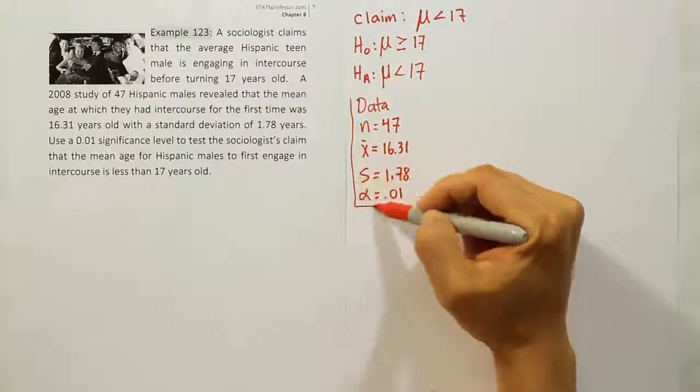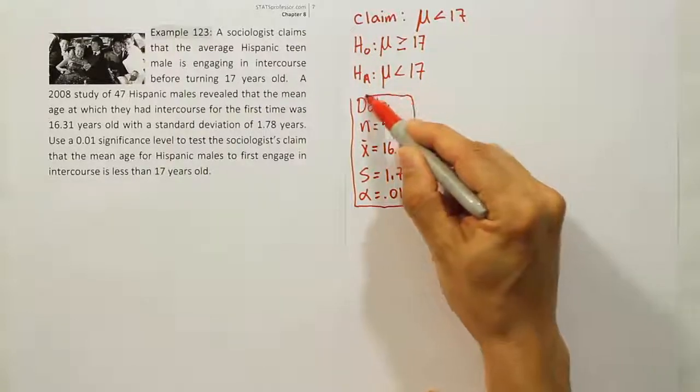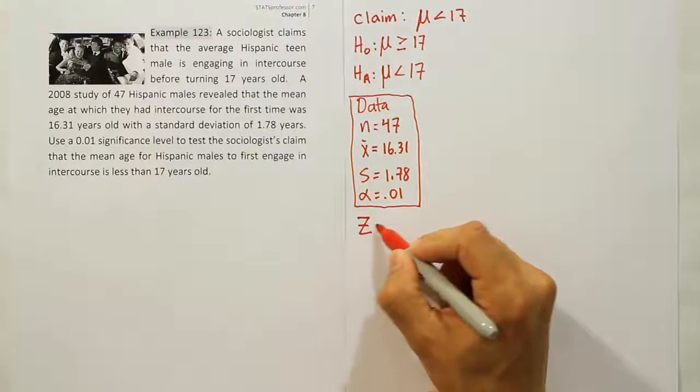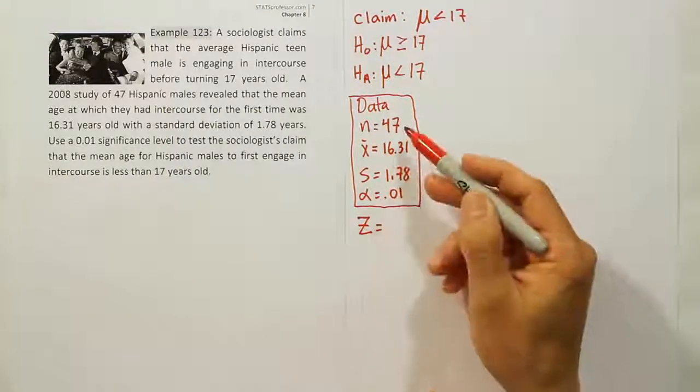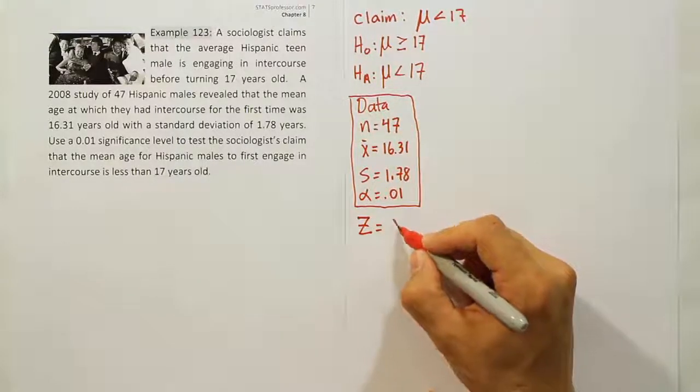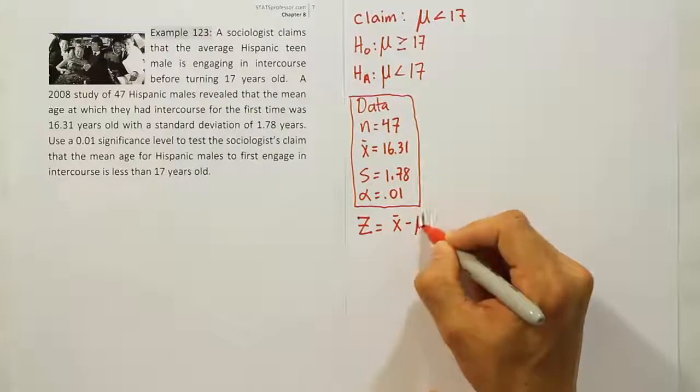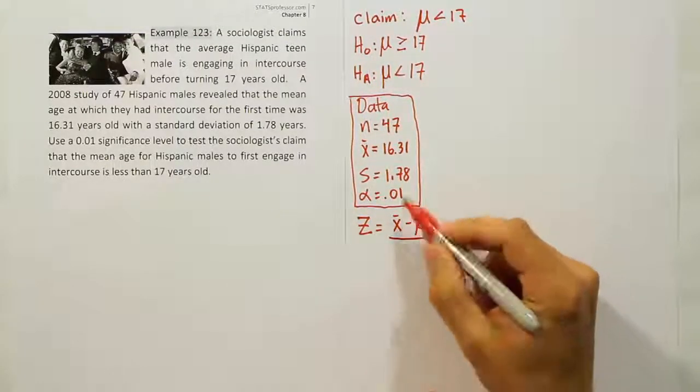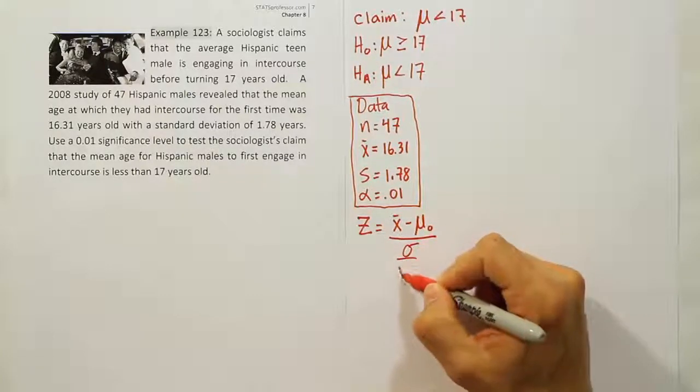Taking this data, we're going to enter it into our test statistic now. Our test stat is going to be Z equals... Remember Z because the sample size is over 30. And we'll have X bar minus the mean from H0 divided by the standard deviation over the square root of N.